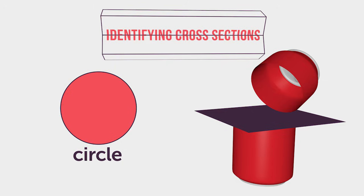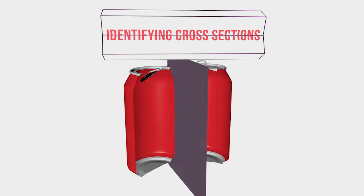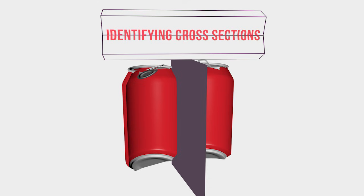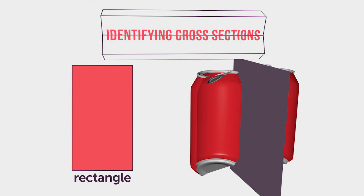What if you took the same can of soda and cut it vertically? What two-dimensional shape would you form? With a vertical cut, a rectangle would be formed. Different cuts on a three-dimensional figure will form different two-dimensional shapes.